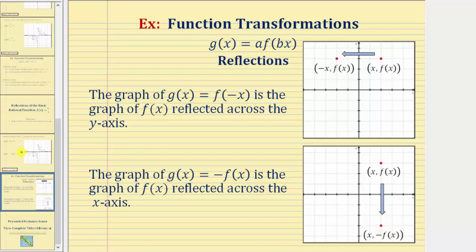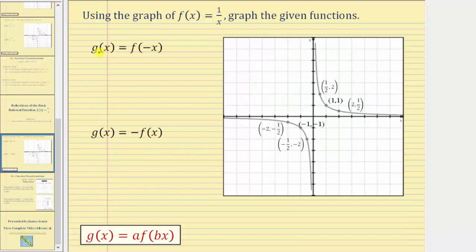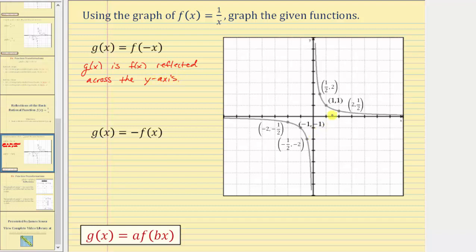Going back to our two examples: for our function g of x here, we'd be changing the sign of the x-coordinates of the points on the parent function, which is a reflection across the vertical, or y-axis. So g of x is f of x reflected across the vertical, or y-axis. We'll use these six key points on the parent function, reflect them across the y-axis, and then graph g of x. These points are going to be on the left, and these points are going to be on the right.